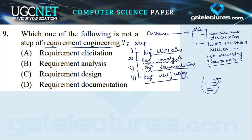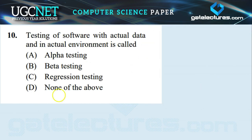After preparing the SRS, the last step is requirement verification. Now checking the options: requirement elicitation is a step — yes, we gather information from customers. Requirement analysis is a step — yes, we refine gathered requirements. Requirement design — no such step exists, so this is wrong. Requirement documentation is a step where we prepare the SRS document — this is true. So option C, requirement design, is the incorrect step. The answer is C.